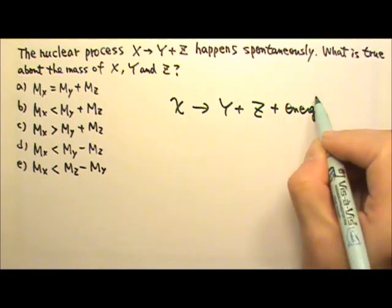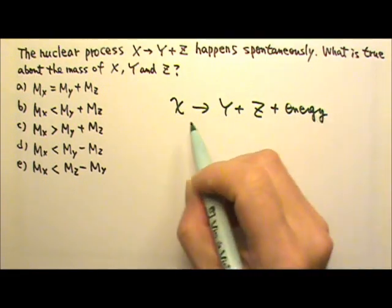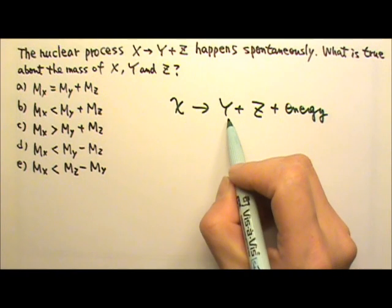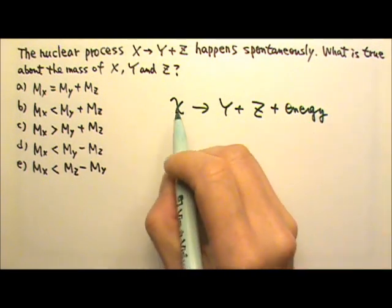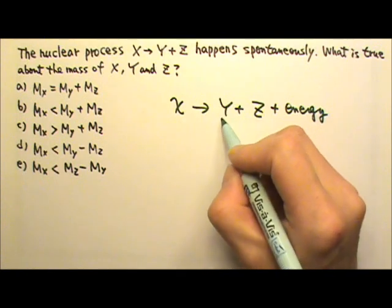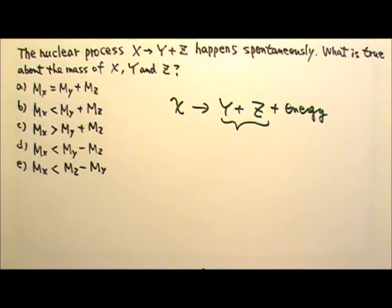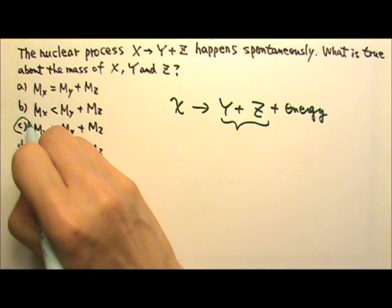That means the energy is equivalent to mass. So if x turns into y plus z plus energy, that means x must be heavier than y and z combined. So the answer is C.